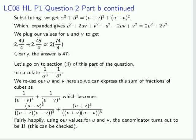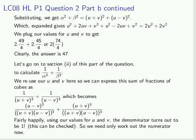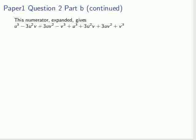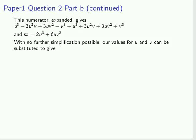Quite happily, we see the complicated denominator. When we plug in our values for u and v, it turns out to be 1. In fact, this should be checked by the student. So we need to only work out the numerator. So we check out the numerator, expand it out. It is pretty complicated, but there are cancellations, and we get 2u³ + 6uv². With no further simplification possible, our values for u and v can be substituted with the numerical values.